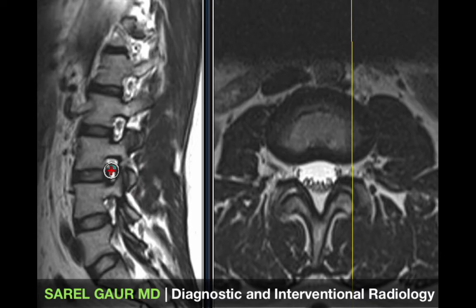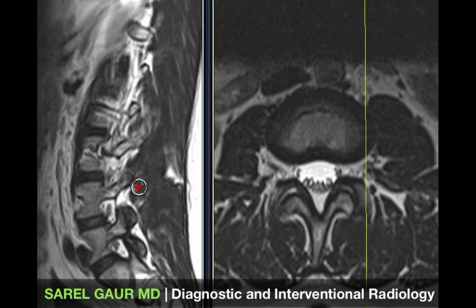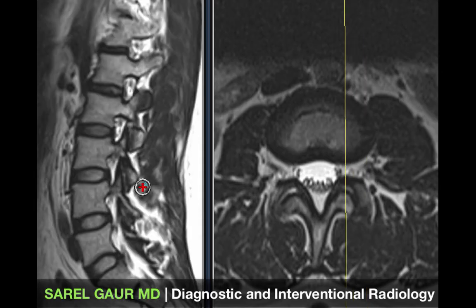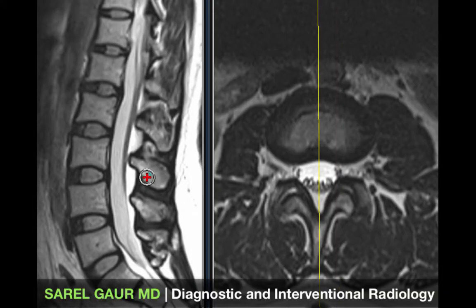The facet joint provides a lot of mobility to the spine, allowing greater range of flexion, extension, rotation, and side-to-side motion of the lumbar spine. Following the facet joint out posteriorly, it connects back in the midline via the lamina, which returns to the spinous process.